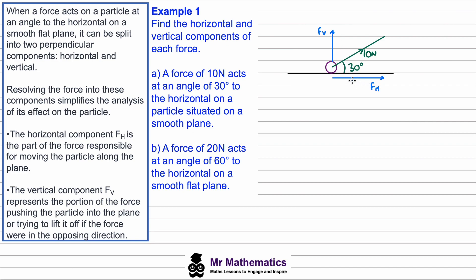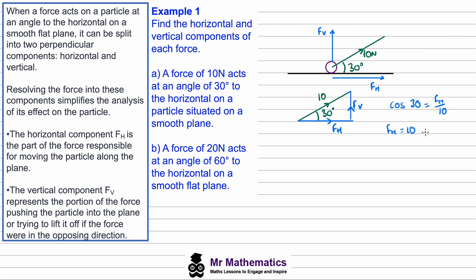To work out the horizontal component, we can think of this as a right angle triangle, where we've got the horizontal force, the angle of 30 degrees, and an opposite side. We can think of the horizontal force as the adjacent side of this right angle triangle, and because it's the adjacent with a known angle and hypotenuse, we can use cosine. So cos 30 = FH / 10, giving a horizontal component of 10 cos 30, which equals 5√3 newtons.